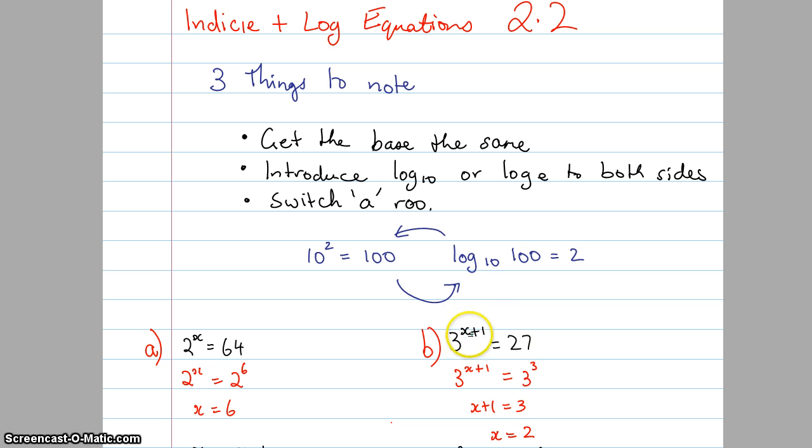For this one here, 3 to the power of x plus 1 equals 27. Again, make it 27 to the base 3, so 3 to the power of 3. And then therefore, once you've got the bases the same, x plus 1 equals 3, so x equals 2. Fairly straightforward. Hopefully you'll be able to do those kinds of questions without too much trouble.